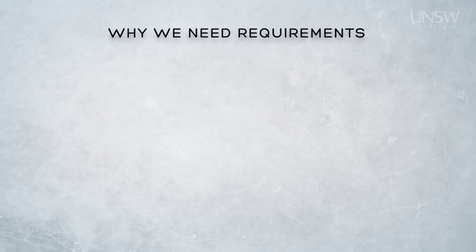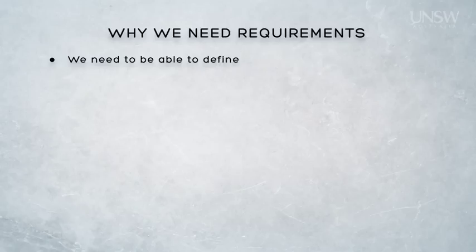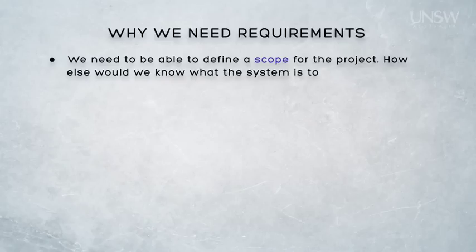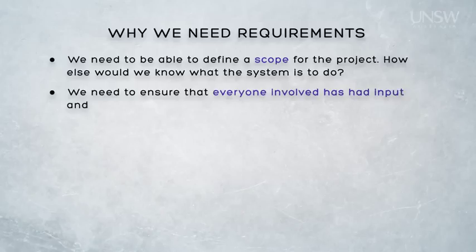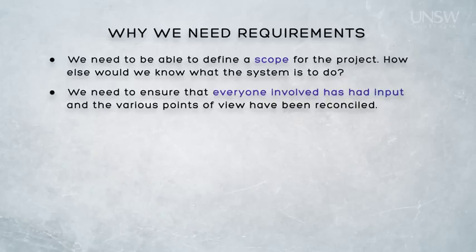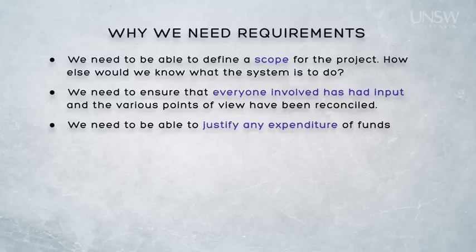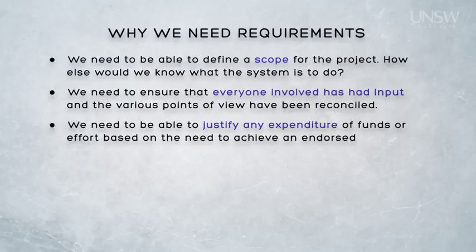So we've talked about needs and requirements — why do we really need them? There are a number of very important reasons. First, we need them to be able to define the scope of the project; without them, how else would we know what the system was to do? Then we need to ensure that everyone involved has had their input, and all the various points of view have been reconciled. The only way to do that is to group all the requirements into a balanced set of requirements. We also need to be able to justify any expenditure of funds or effort by the organisation in terms of being able to meet that endorsed set of requirements.